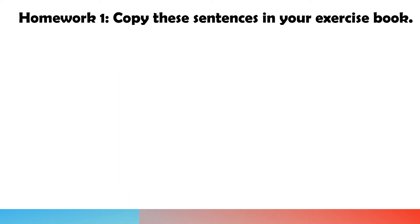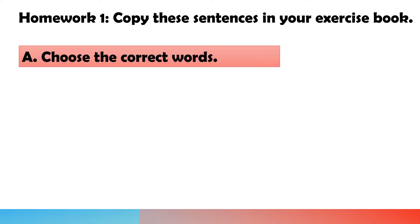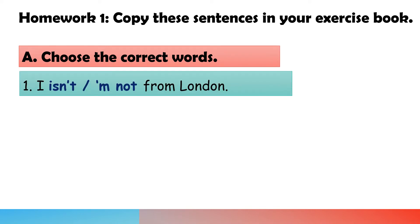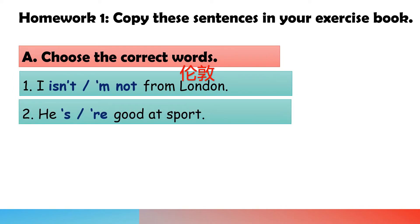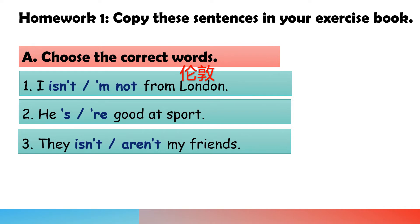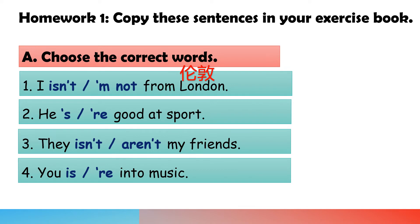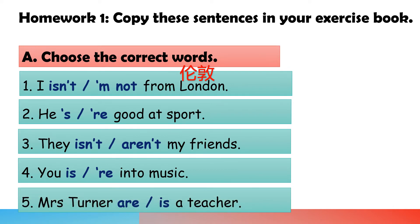Homework 1: Copy these sentences in your exercise book and choose the correct answer. 1. I isn't / am not from London. 2. He's into sports. 3. They aren't my friends. You are into music.